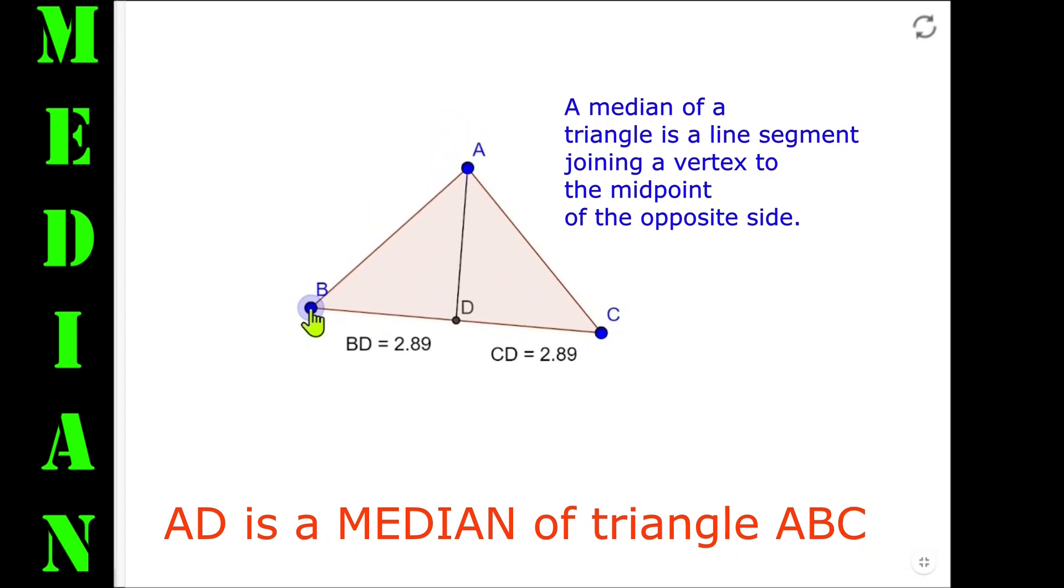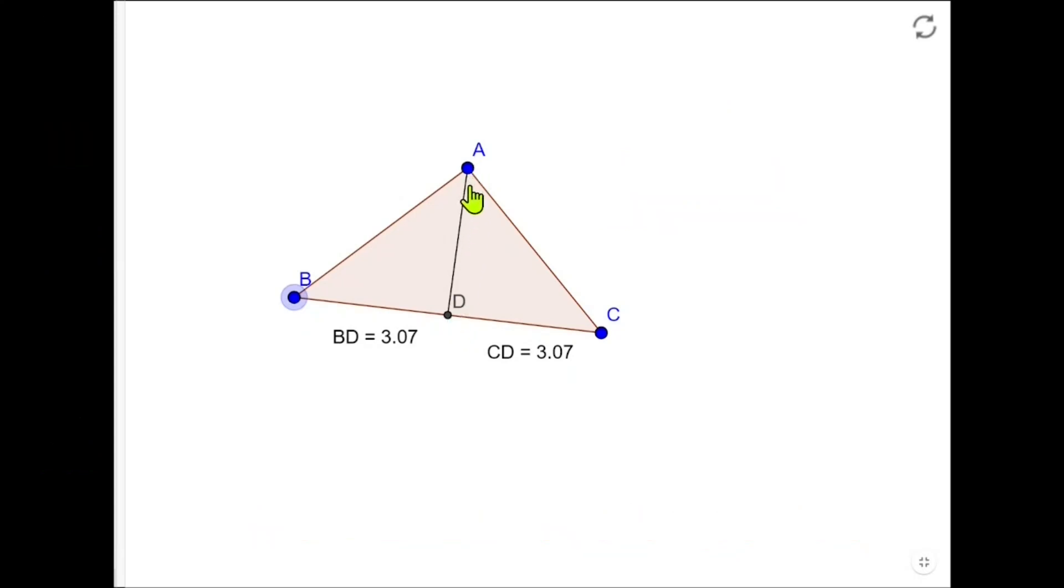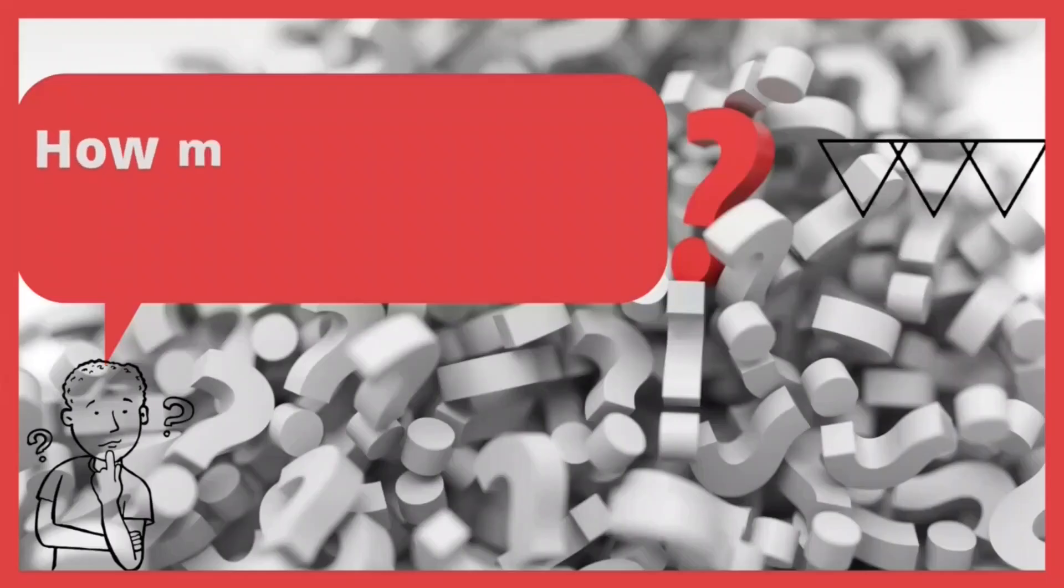Now I'm dragging vertex B, and you will notice that even if the shape and size of the triangle is changing, every time we are getting the midpoint of segment BC which is at point D, and vertex A is joined with that midpoint only. That is why AD is a median.